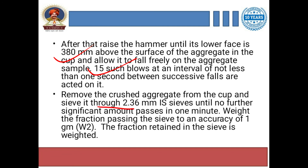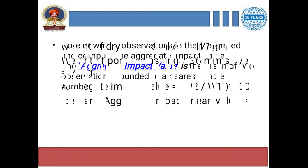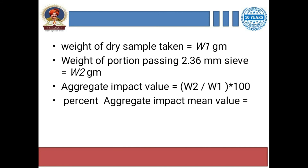After giving 15 blows, collect the crushed sample and pass it through the 2.36 mm sieve. The weight of material passing through the 2.36 mm sieve is recorded as W2. The aggregate impact value is calculated as W2 divided by W1, multiplied by 100, giving the percentage aggregate impact value.